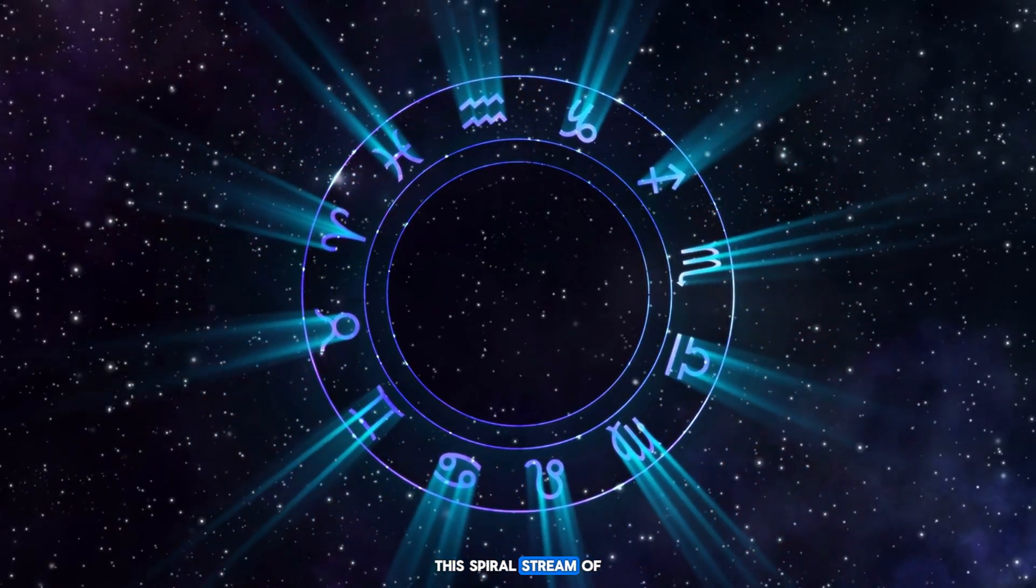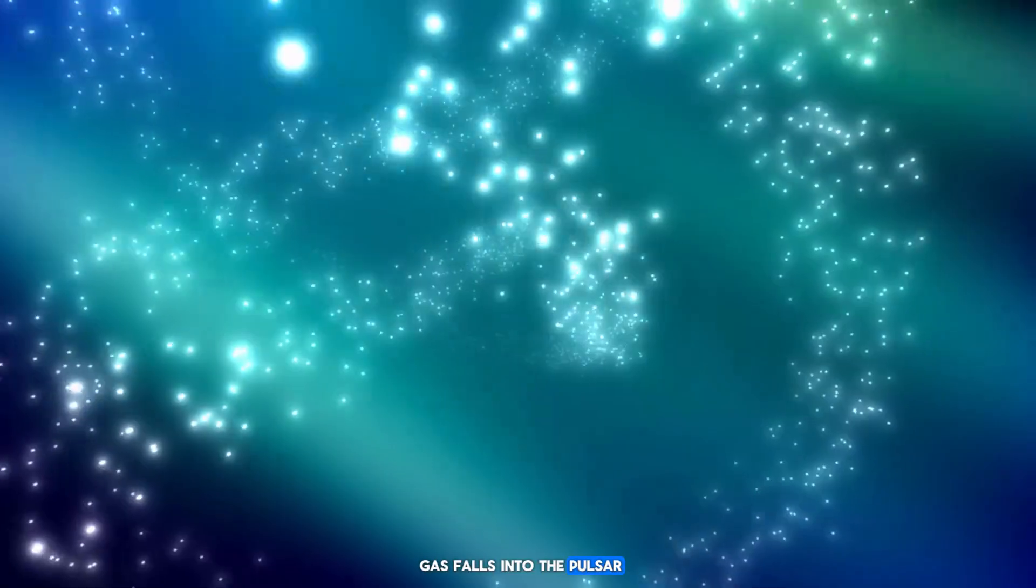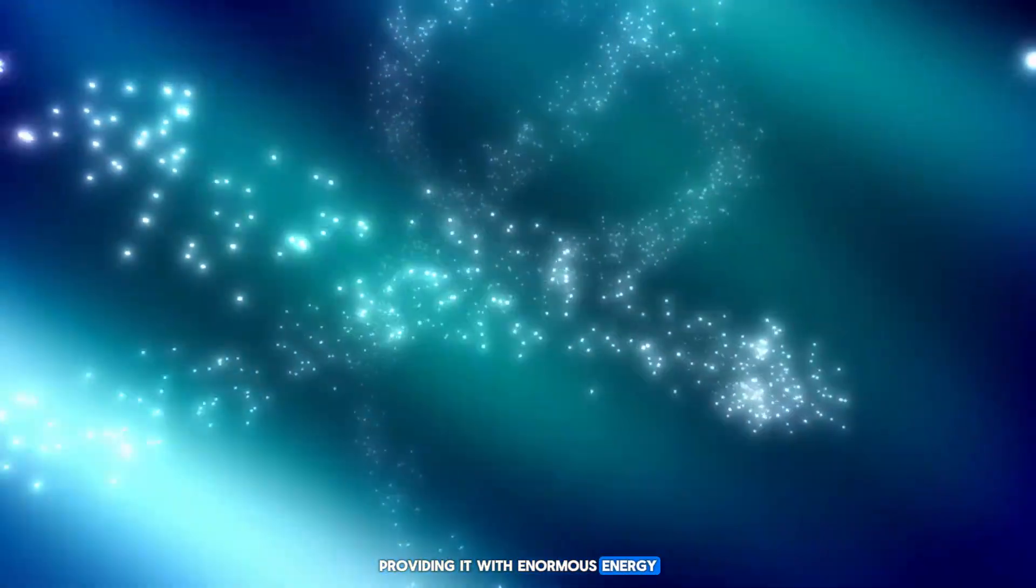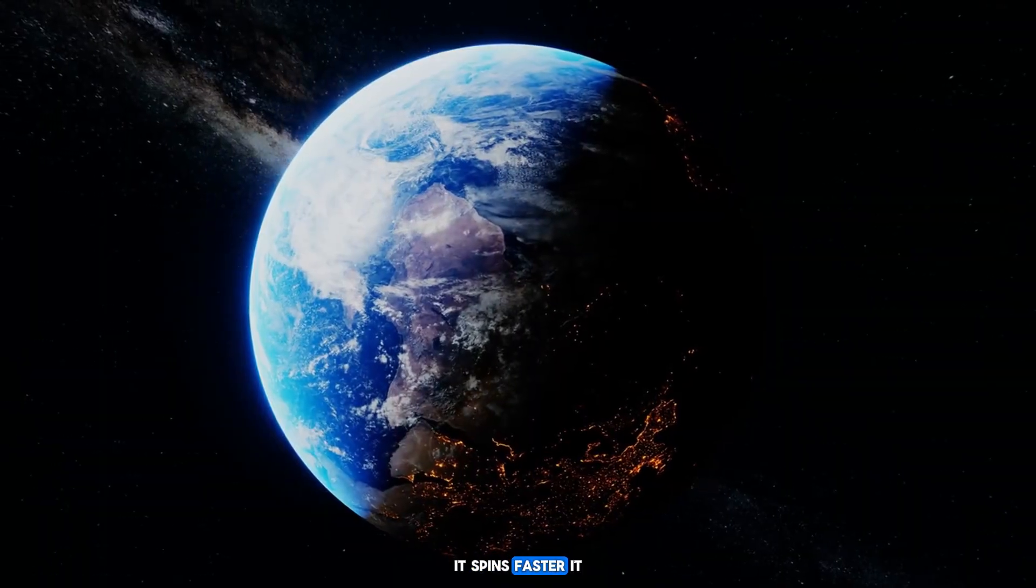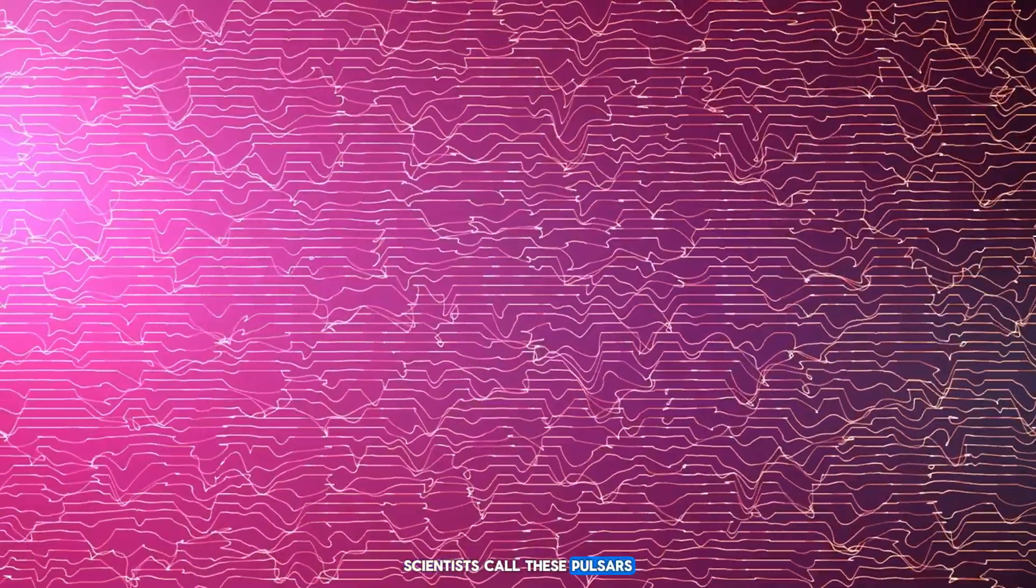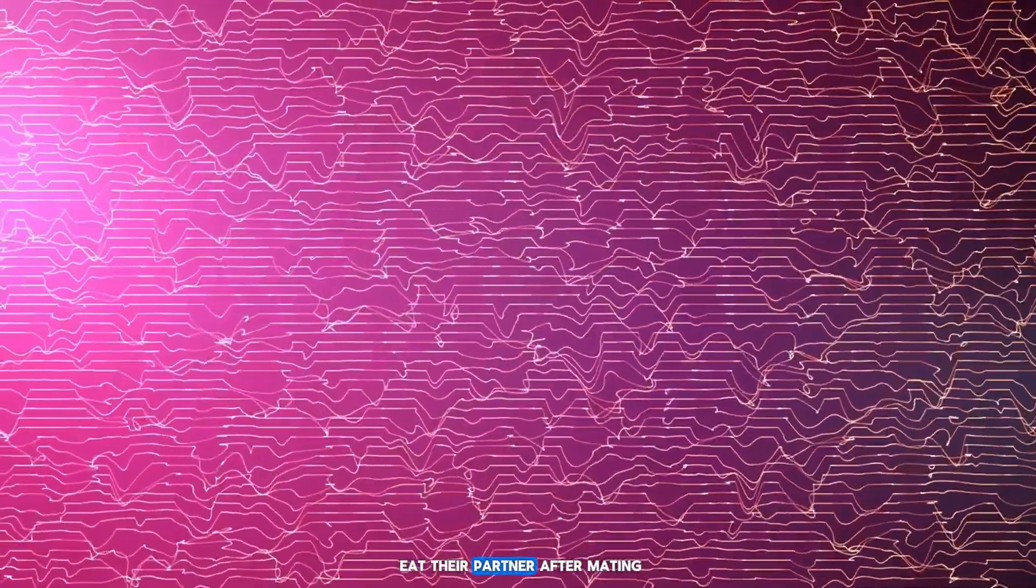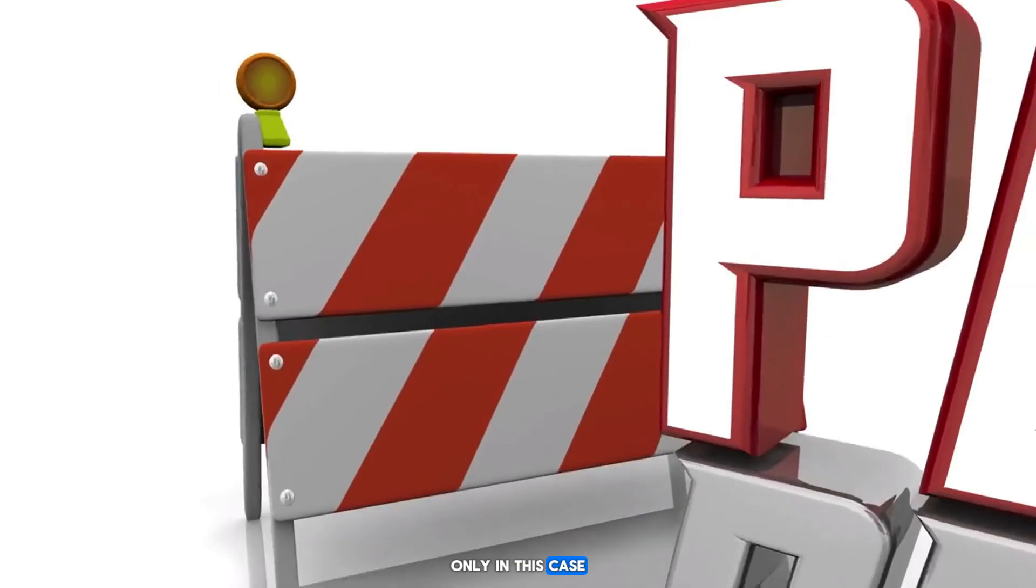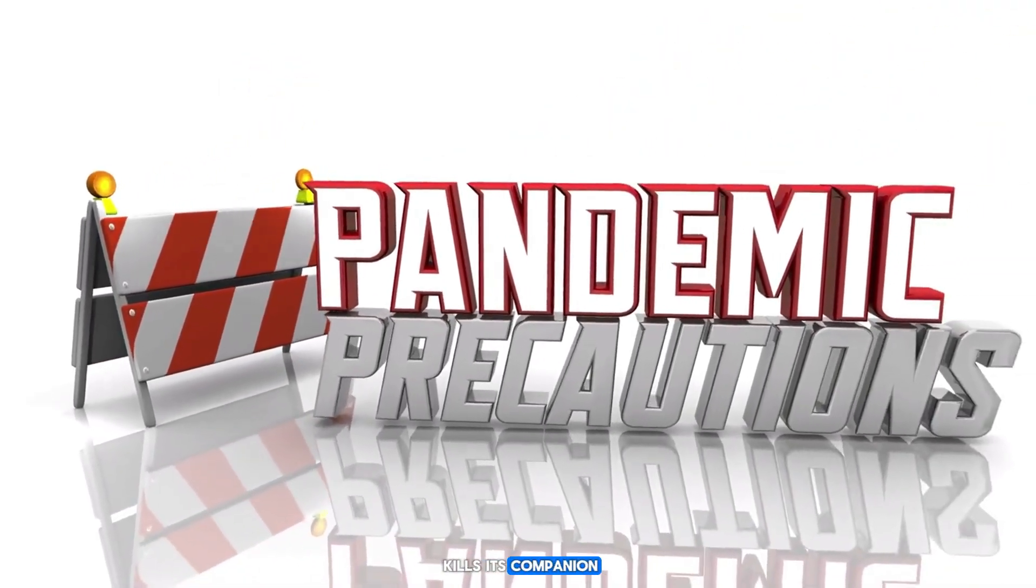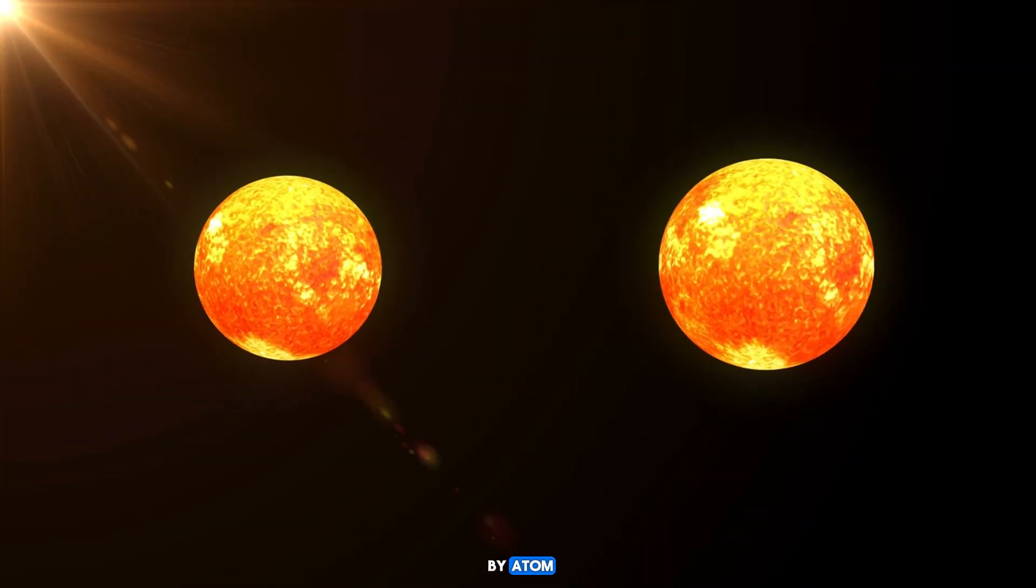This spiral stream of gas falls into the pulsar, providing it with enormous energy. It spins faster, it gains mass, it becomes more extreme. Scientists call these pulsars black widows. Like a spider, they eat their partner after mating—only in this case, the pulsar not only kills its companion but eats it atom by atom.